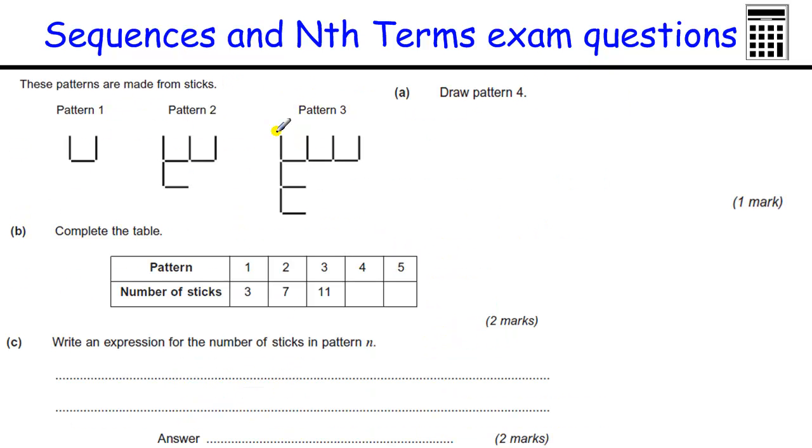One more, we've got to draw a pattern. Draw the fourth pattern. So we've got one, two, three U's going that way. So we're going to make that into four U's going that way. And then coming down one, two, three, and one more makes four. The number of matchsticks, well I could count those, but this is a very straightforward sequence. It's going up by four each time. So that's going to be 15 and that's going to be 19.